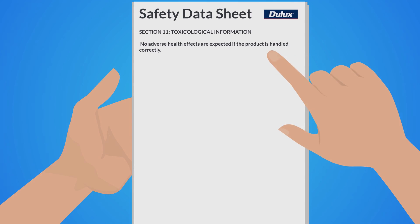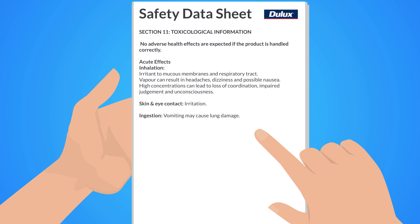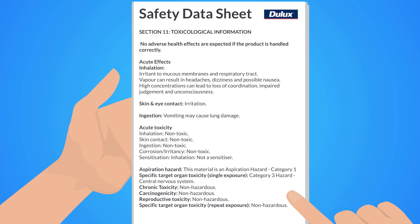Section 11 is where we go to learn how the chemical impacts health. After a general comment, we see acute or rapid effects of inhalation, followed by the acute effects of soft tissues and ingestion. Continuing down the Section 11 list, we come upon acute toxicity or rapid poisoning. Wrapping up Section 11, we can see the chronic or long-term exposure effects on health.